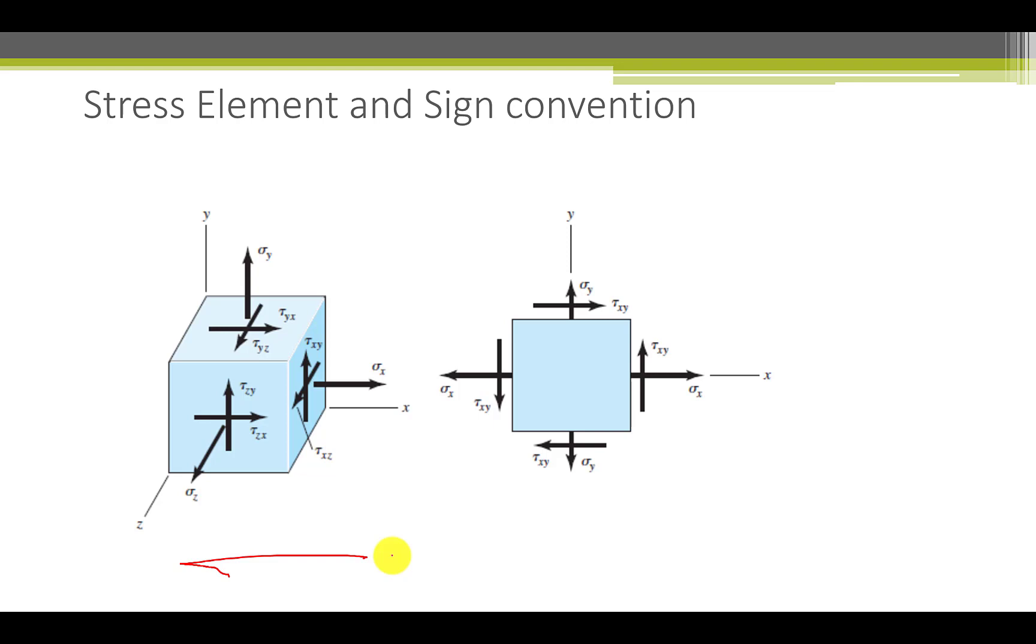First, I want to define what a face is. A face is a plane. So for example, this is an x face because it is normal. It's a plane perpendicular to the x axis. It's the positive x face because this face is facing the positive x direction, which is that way. There's a corresponding negative face on the opposite side. This applies to all six faces.